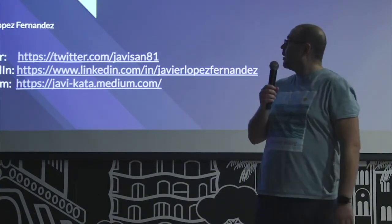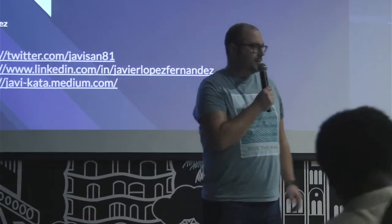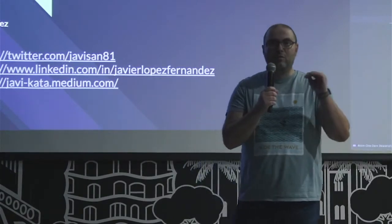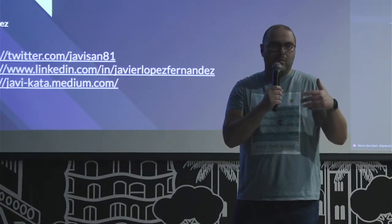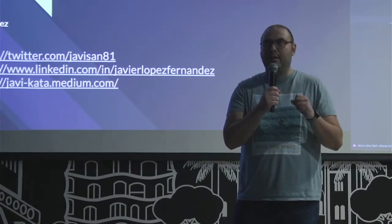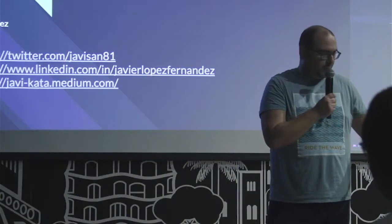Hello everyone. I am Javier and we are going to talk about the whys of hexagonal architecture. I am not going to talk about what hexagonal architecture is — what we are going to do is try to understand some of the whys of that technique, and we are going to do it through coding. So we are not going to take a look at slides; it's more about taking a look at code. We are going to use the rover kata — the Mars Rover kata — and we are going to do the hexagonal rover kata.